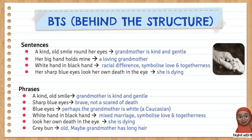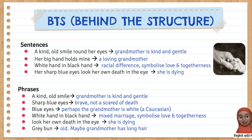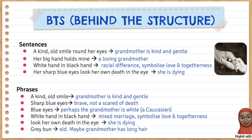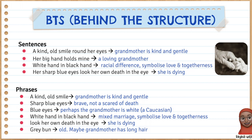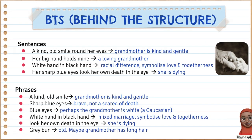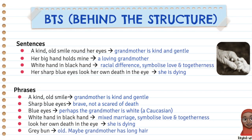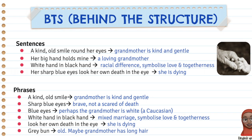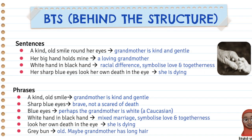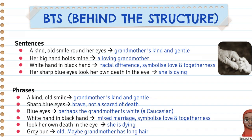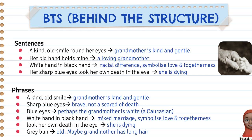Looking at the phrases extracted from the sentences: 'A kind old smile' — grandmother is kind and gentle. 'Sharp blue eyes' — she is brave, not scared of death; 'sharp' means tajam pandangan, a piercing gaze. She is not afraid of death. Grandmother has blue eyes, so she is Caucasian, and the grandchild is dark — 'white hand in black hand' symbolizes love. 'Look her own death in the eye' — she is dying. 'Gray bun' means she is old with long gray hair.